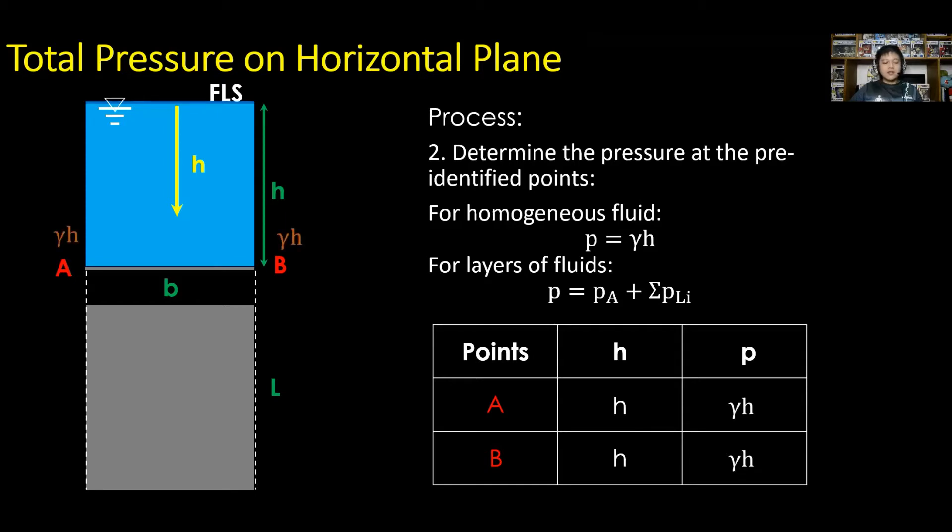Assign pressure values at A and B, the gamma times h, and draw the pressure diagram. As shown, the distribution is uniform throughout the surface.